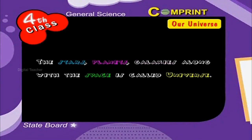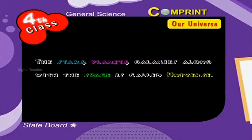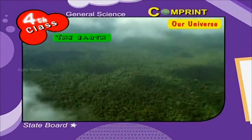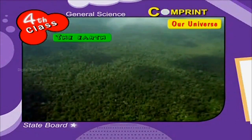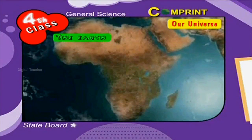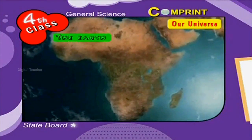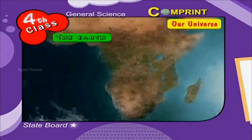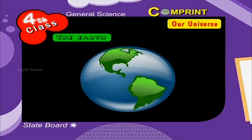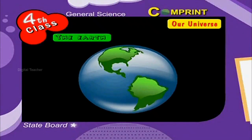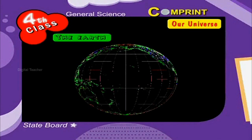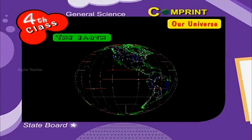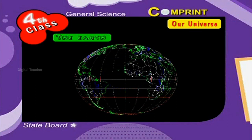Our universe — the stars, planets, galaxies, along with space — is called the universe. The earth is the planet on which we live. The earth is round in shape, but it looks flat because the earth is a very big ball with a very small curve. The globe is the model of the earth. The rivers, mountains, seas, and oceans in the world are shown on the globe.